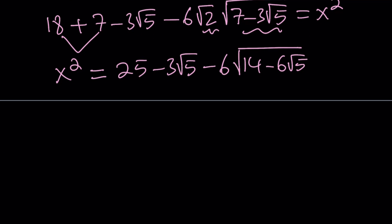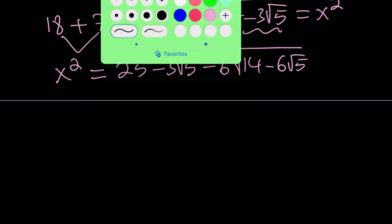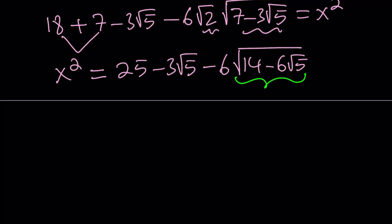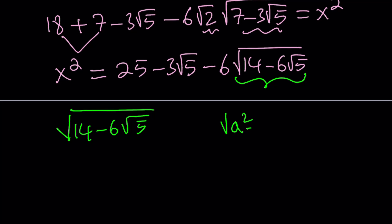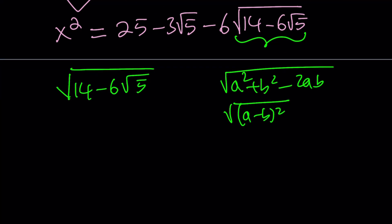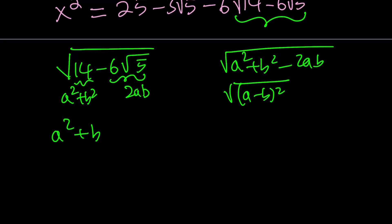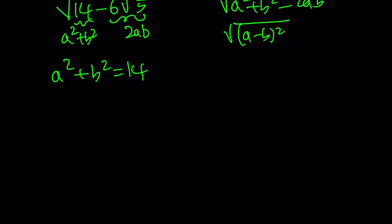We got a really complicated expression, but we can definitely simplify this. Let's focus on this expression right here — I'm going to simplify it using algebra. We want to make it look like the square root of a squared plus b squared minus 2ab, because that is the square root of (a minus b) squared, which can be simplified. So we're going to set a squared plus b squared equal to 14, and 2ab equal to 6 root 5.